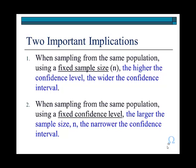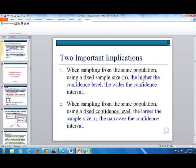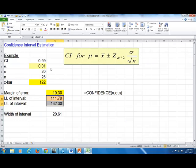The second implication here is when sampling from the same population using a fixed confidence level, the larger the sample size, the narrower the confidence interval. So let's demonstrate this again on Excel. So initially, we had 0.95, so let's keep it where it was before.